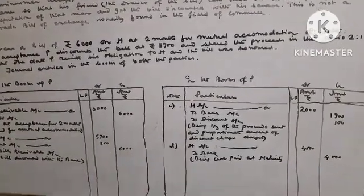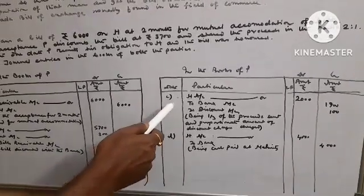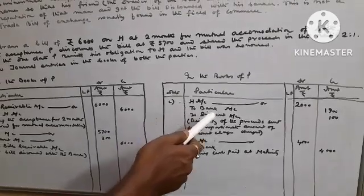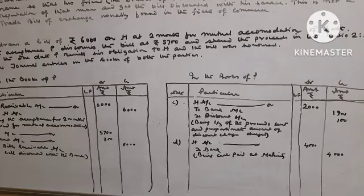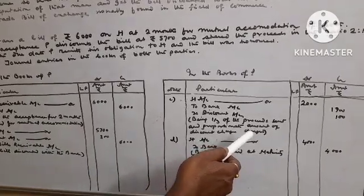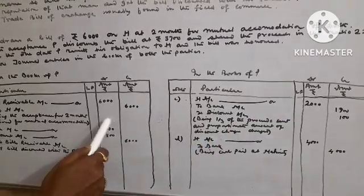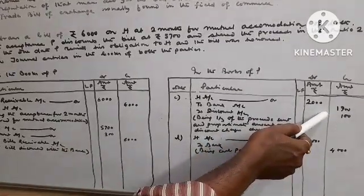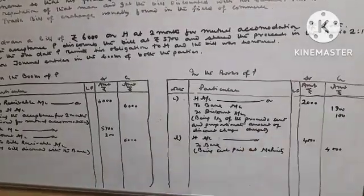Now, one-third of the proceeds are sent to H. Entry will be H account debit to Bank account, to Discount account, being one-third of the proceeds sent and proportionate discount charged. One-third of 6,000 is 2,000. One-third of 5,700 is 1,900. One-third of 300 is 100 rupees.